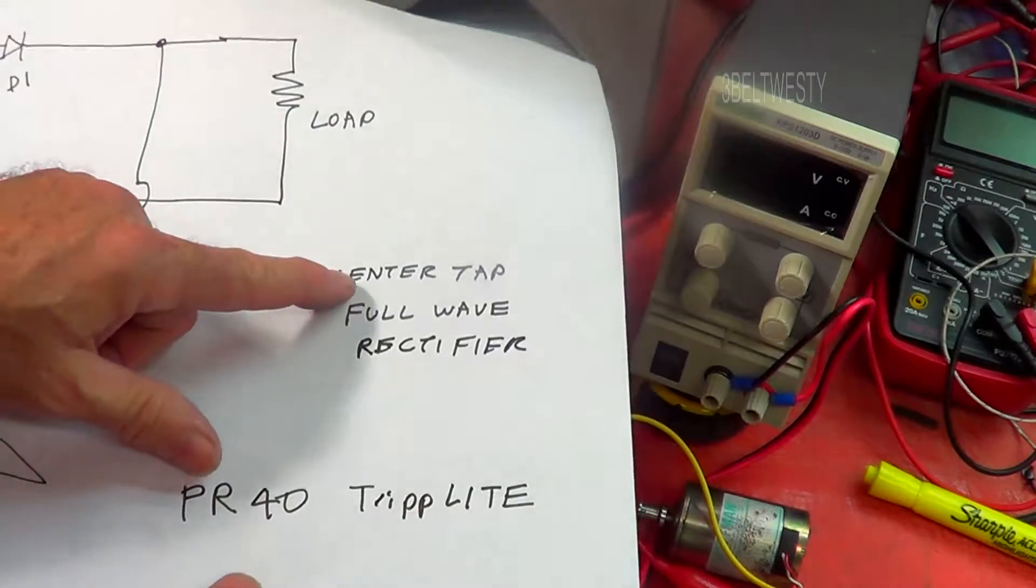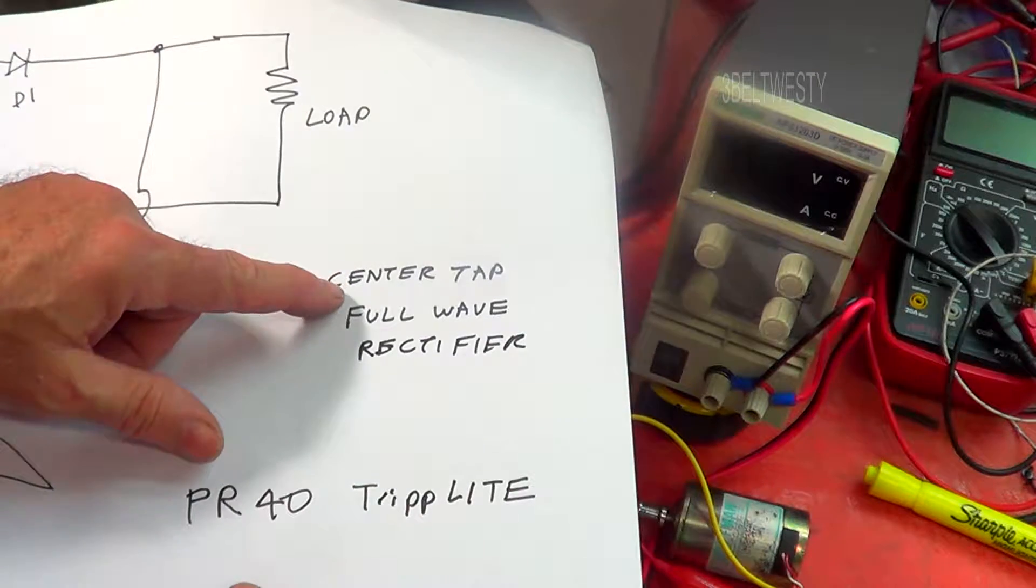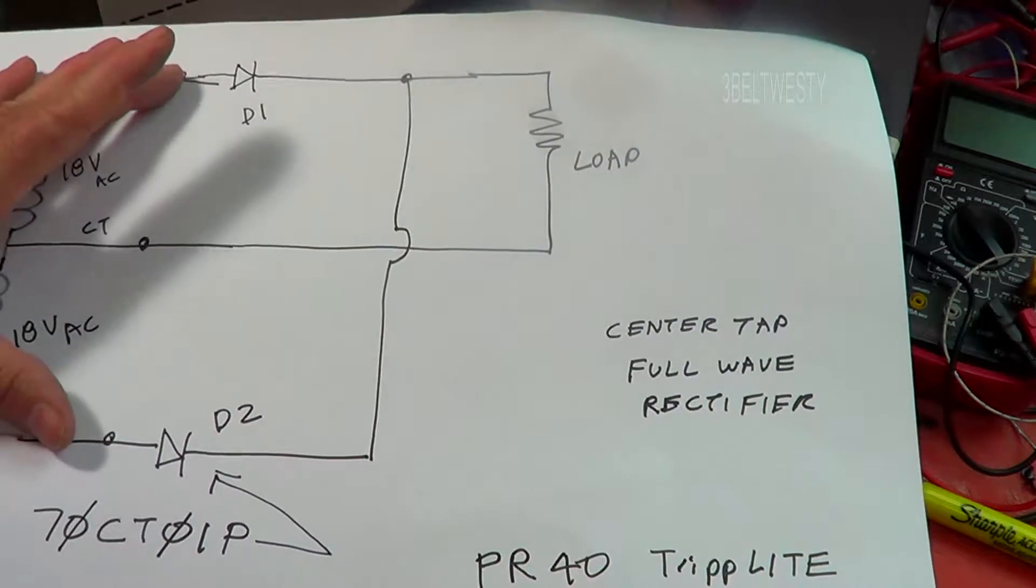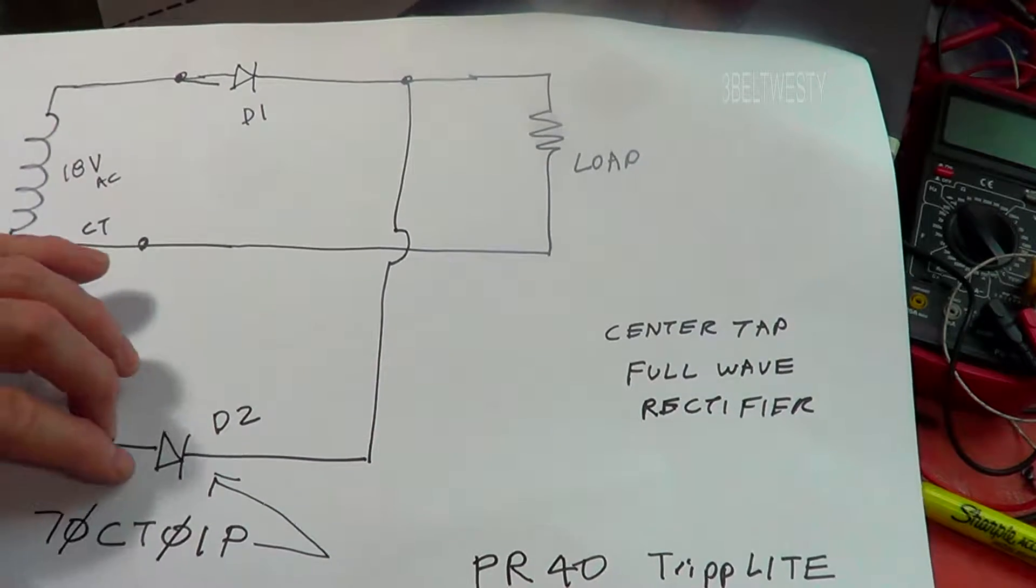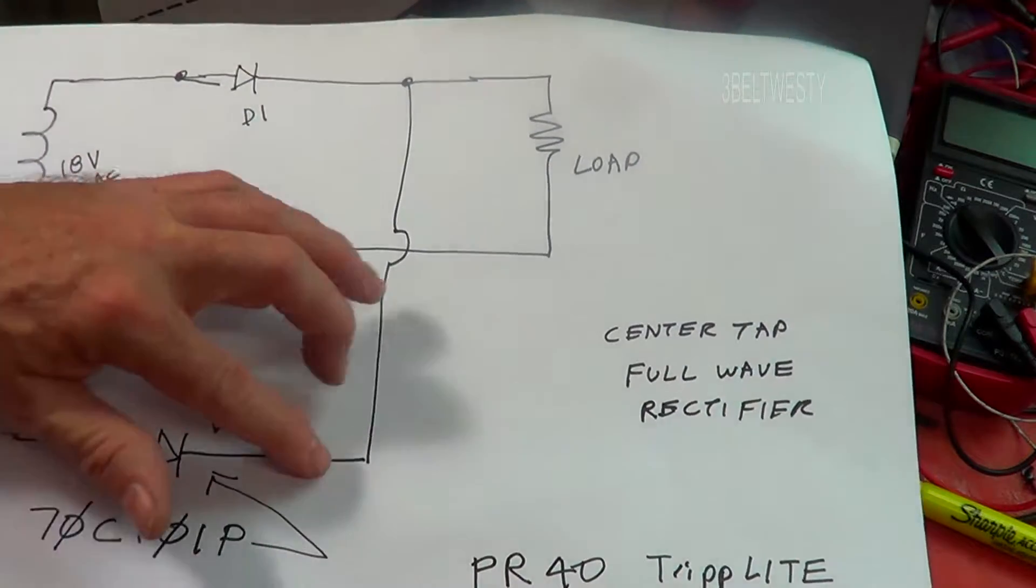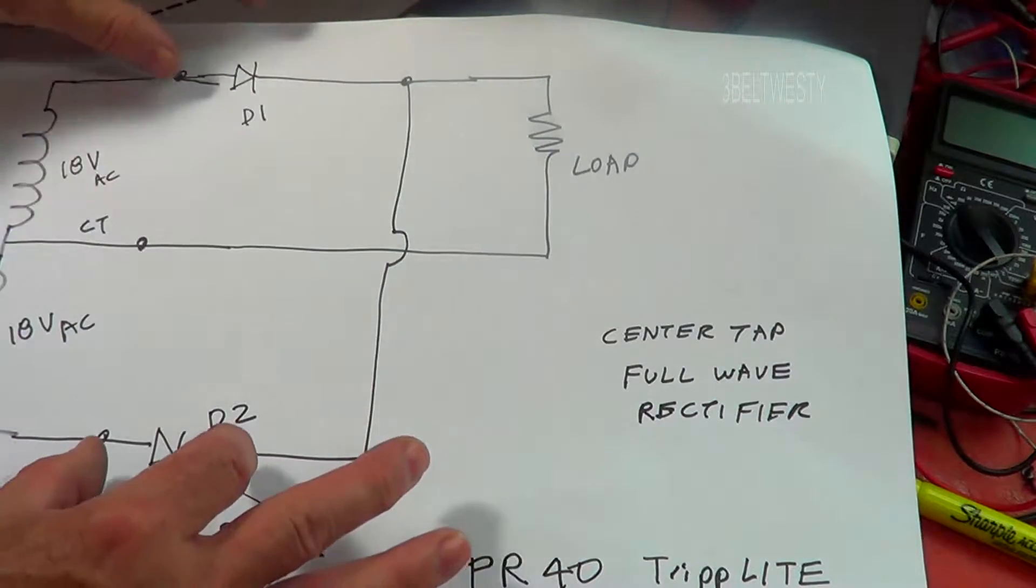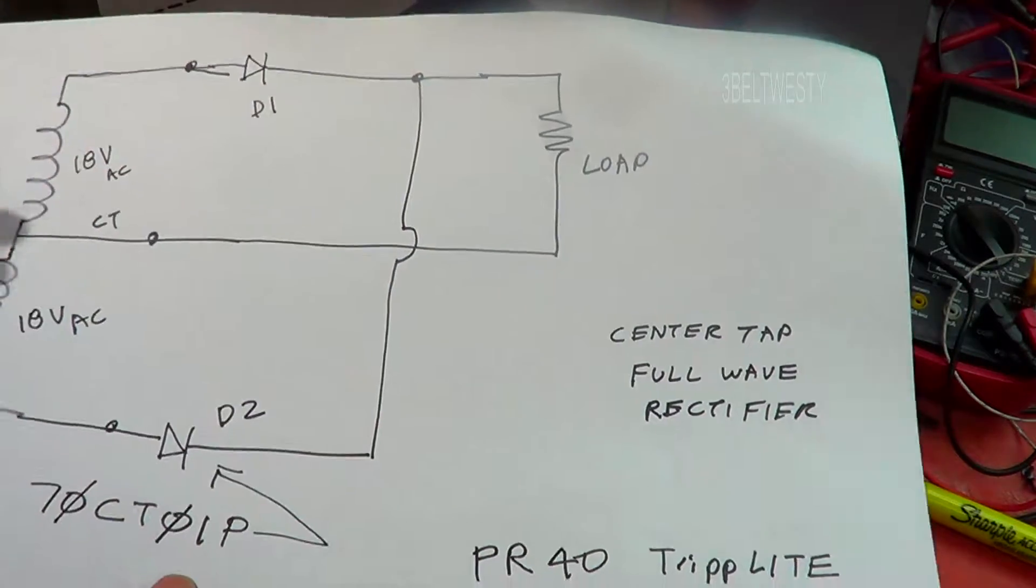This is a full tap, center tap, full-wave rectifier circuit, classical, but they've got two wires coming from this and to each one of these so electrically the full-wave bridge looks like one big diode.